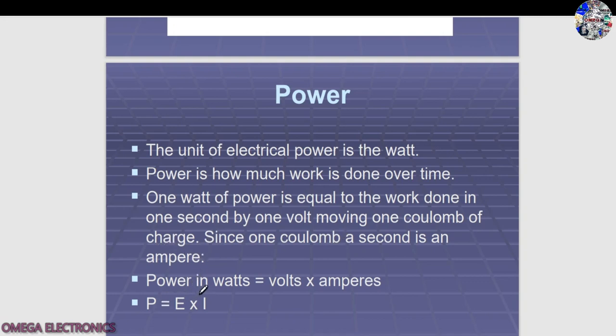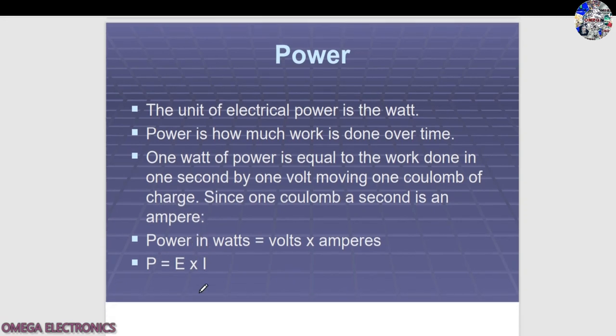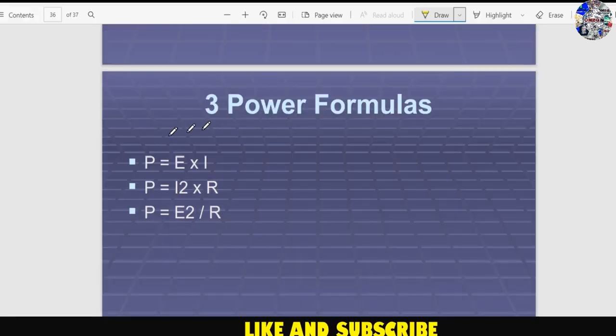Since one coulomb per second is one ampere, power can also be written as P = E × I. I hope you enjoyed the session. If you have any queries, please comment below. Goodbye.